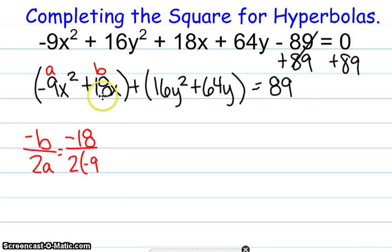When we go through, the opposite of positive 18 is negative 18, and we multiply 2 times negative 9, we get negative 18 over negative 18, which we know reduces to 1. So, that's our first part of our center of our hyperbola.